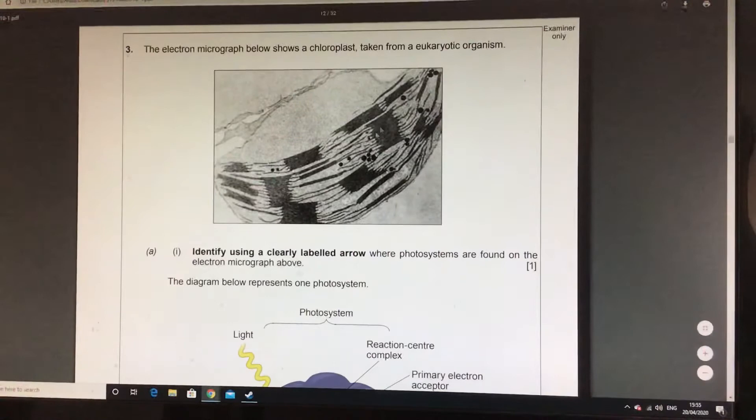You will see in there, you have got granum stacks, you've got thylakoid membranes, and all you need to do is identify with drawing a label onto where you'd find a photosystem. The photosystems are either on the granum stacks or the thylakoid membranes, so you've got quite a bit to pick from. You can't point to any of the starch grains or what no longer looks like it's part of the chloroplast. Granum stacks or the thylakoid membranes, that's where you want to point.